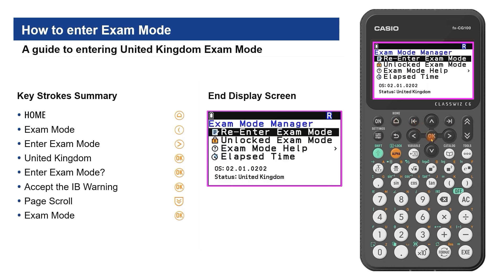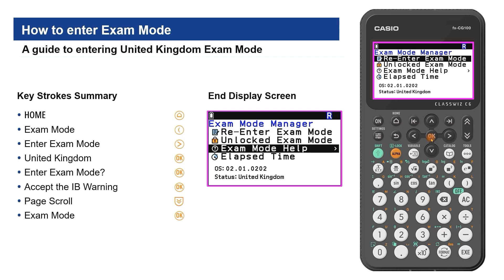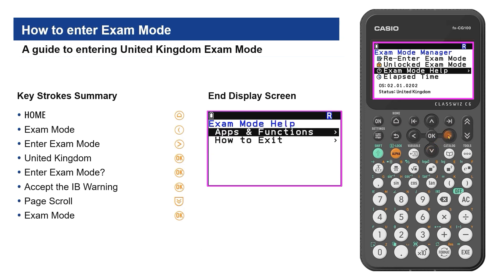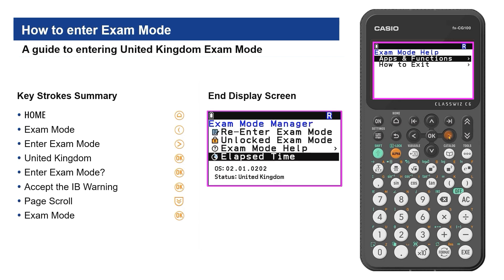In the exam mode manager, it is possible to re-enter exam mode if the magenta border has started flashing, indicating that exam mode will end shortly. Selecting exam mode help gives more details on exam mode restrictions or guidance on how to exit exam mode. The elapsed time in exam mode can also easily be viewed.